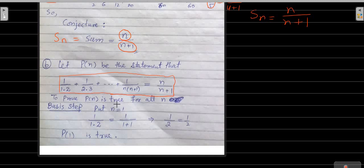If you want to prove this, you need to prove it for all n. First step: what is the basis step? Put n equal to 1. Write the left-hand side and right-hand side. The left-hand side equals the right-hand side, so the basis step holds.